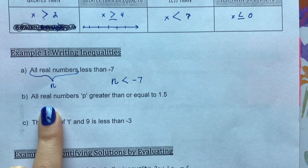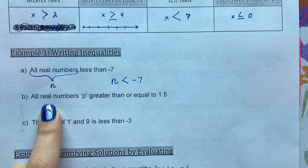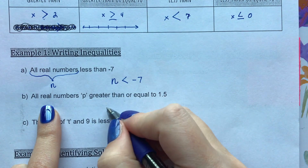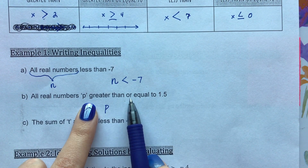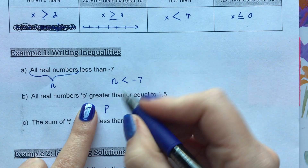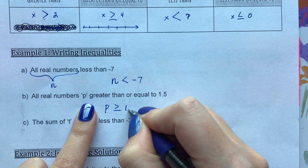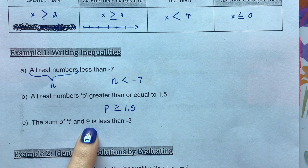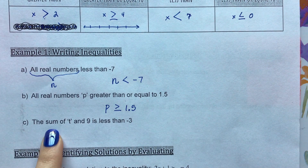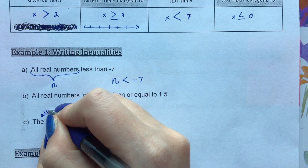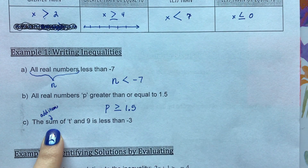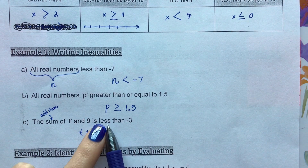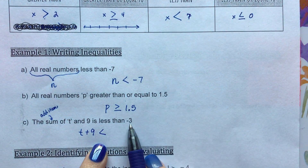For problem B, it is all real numbers P greater than or equal to 1.5. The P is just telling us which letter to use for our variable. So I write P, and then P is greater than or equal to 1.5. Moving right along, it says the sum of T and 9 is less than negative three. The sum means addition, so I'm going to add T and 9 together: T plus 9. And this needs to be less than negative three.